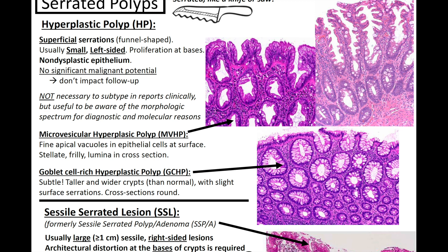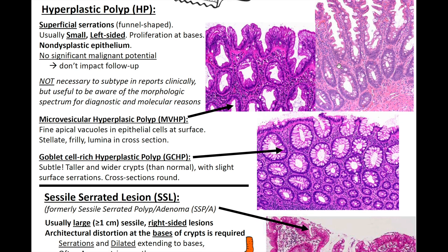Goblet cell-rich hyperplastic polyps are extremely subtle. After staff pointed it out and comparing it next to normal colon, you'll see the goblet cell-rich area is lighter and cleared out — that contrast helps it stand out. For hyperplastic polyps, the serration is up top near the surface. It's not going to be dilated or as serrated at the base, like we'll see in our next entity: SSLs.